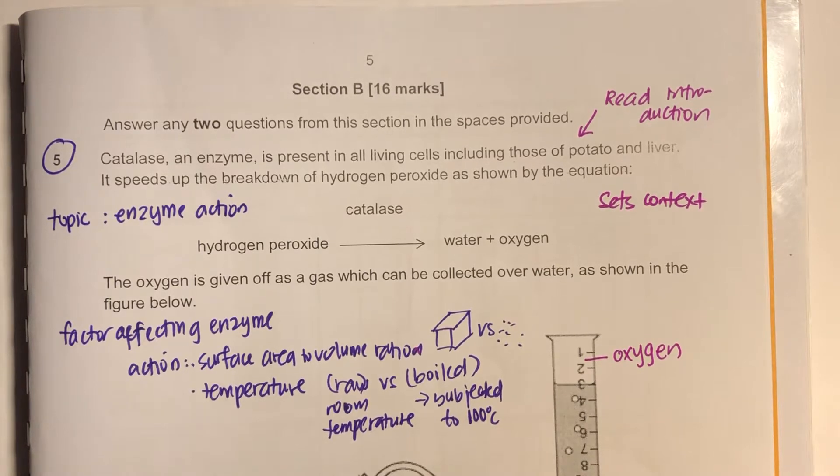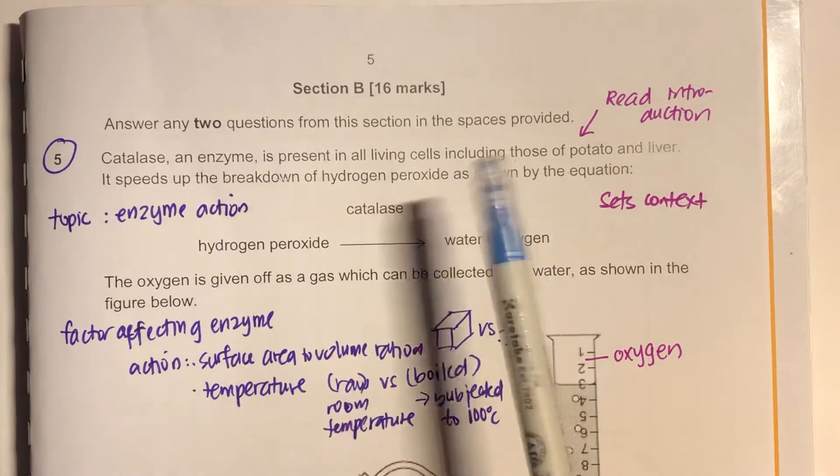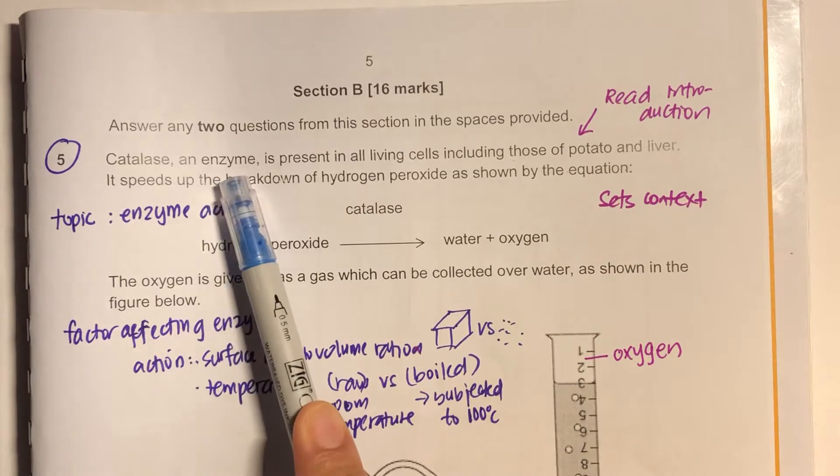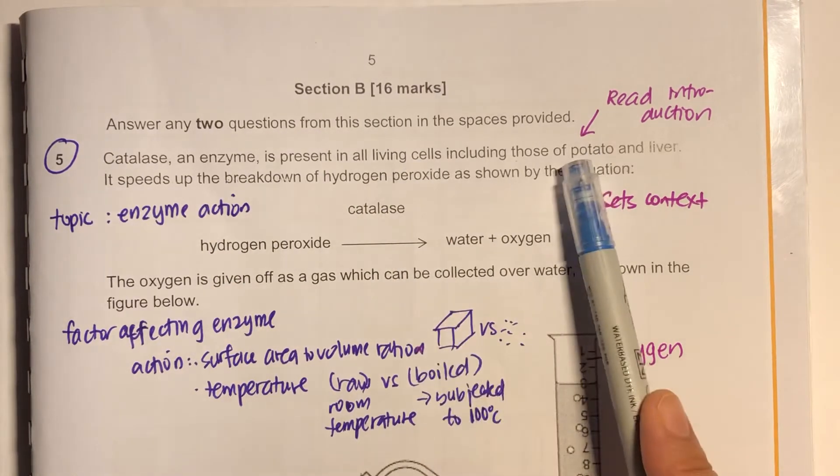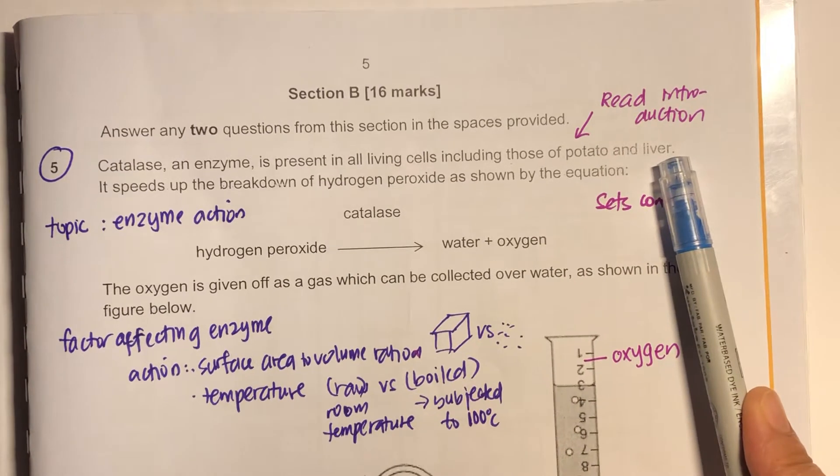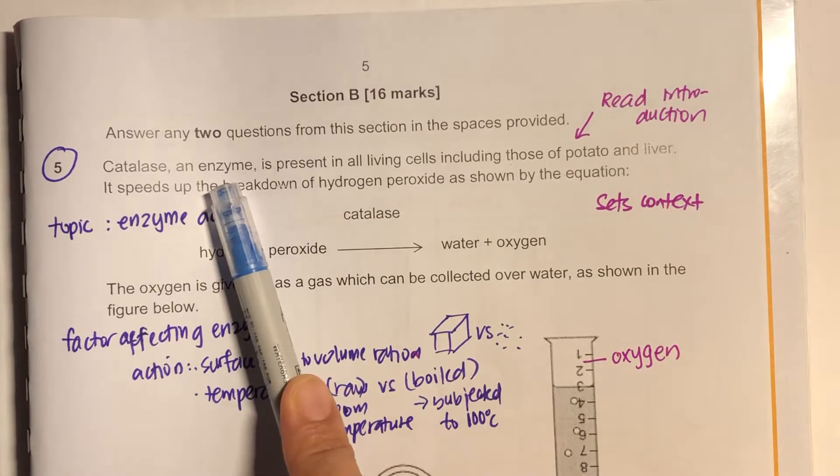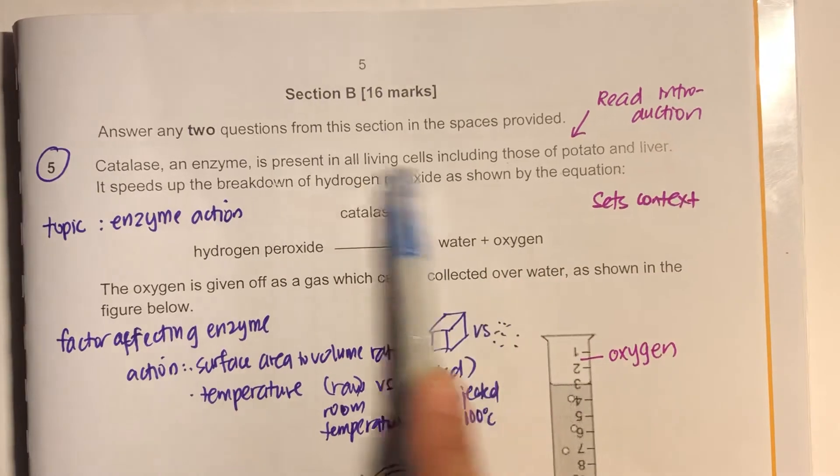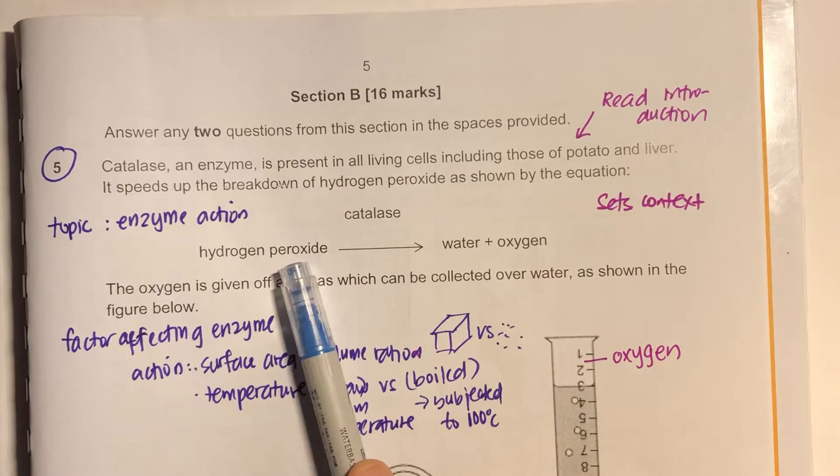Question 5. If you read the introduction, it talks about enzymes present in living cells in potato and liver. You may not have learned this specifically, but the concept of enzyme is within your reach. And when you have not learned the specifics, they will give you the details. So this is what catalase enzyme does to hydrogen peroxide.